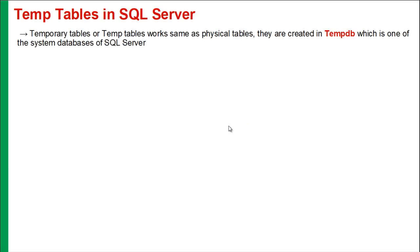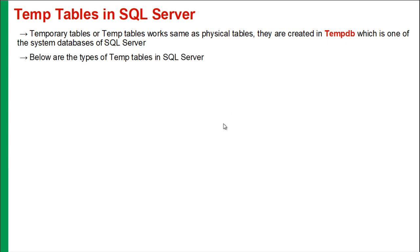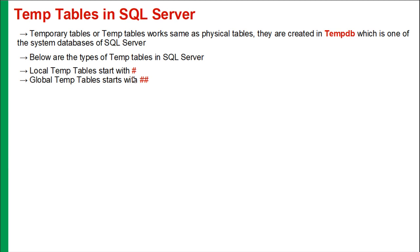The temp tables work the same as physical tables, but they are created in tempdb, which is one of the system databases of SQL Server. There are two types of temp tables in SQL Server. The first one is a local temp table, which starts with a hash sign or a pound sign. The next one is a global temp table, which starts with two hash signs or two pound signs.